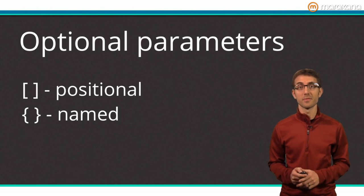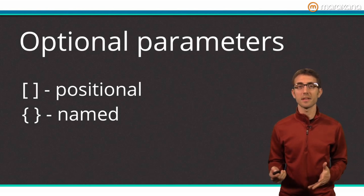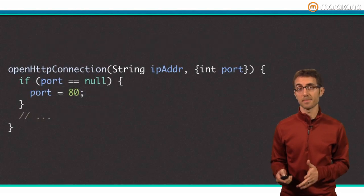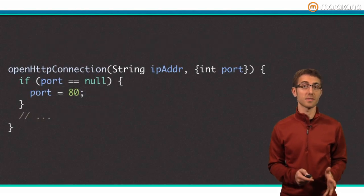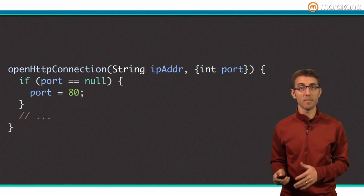There's yet another benefit from the use of optional parameters, but first the setup. Sometimes there's an obvious or default answer for a parameter. Only on occasion does it make sense to pass in something more unique. For example, here's a function that opens an HTTP connection. The first parameter, IP address, could be anything, so it's required. However, almost all HTTP connections use port 80, so the second parameter can be optional.